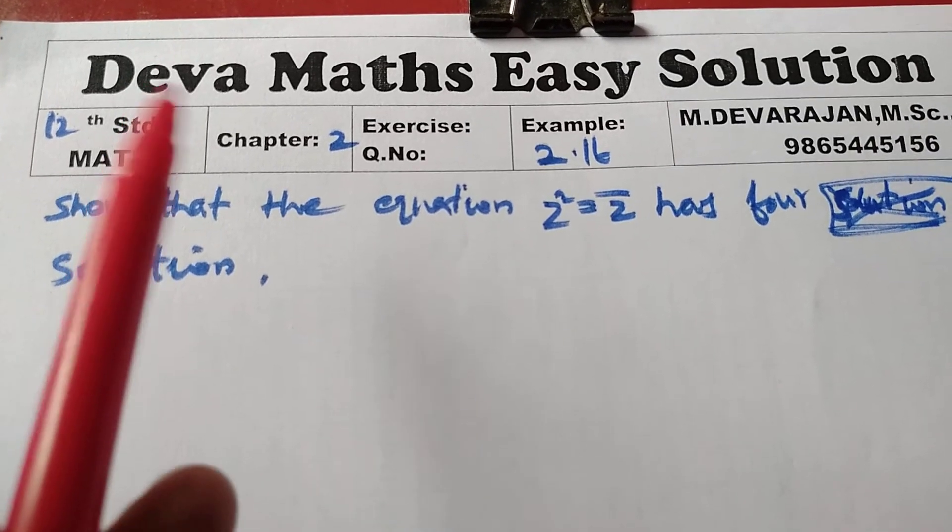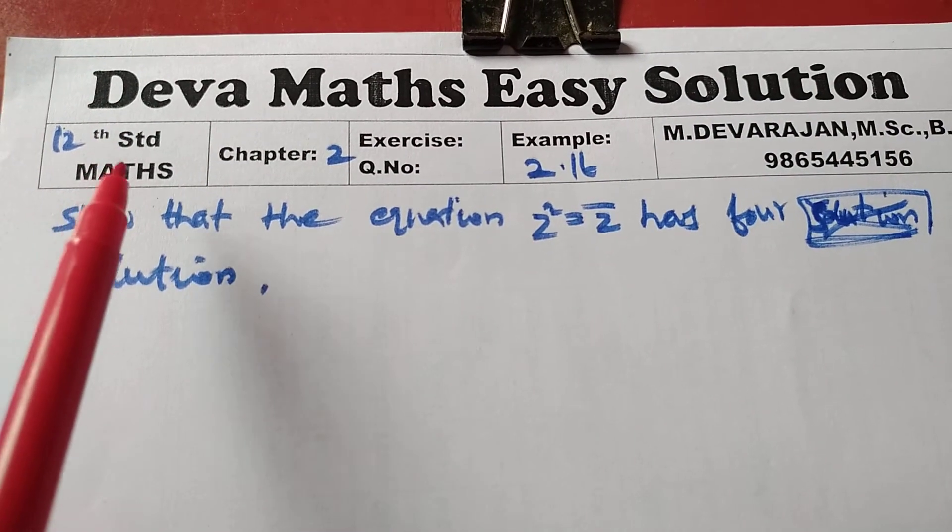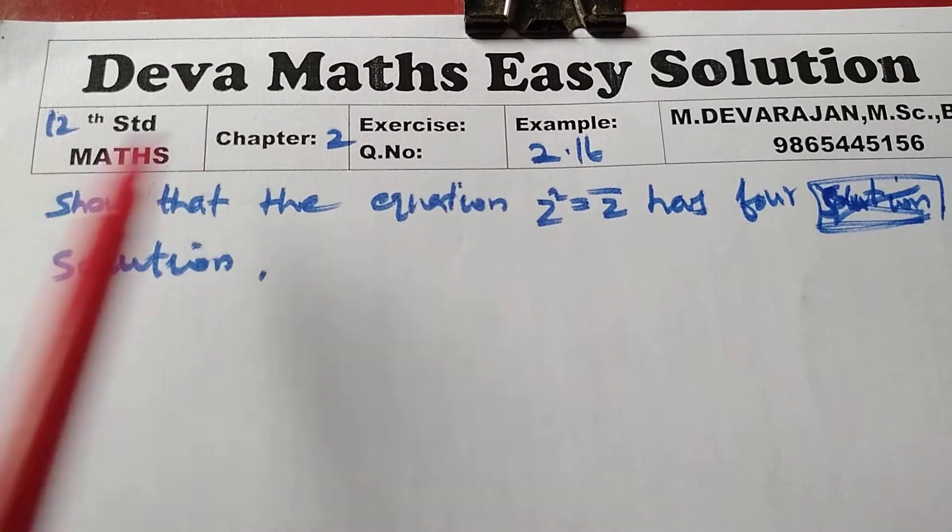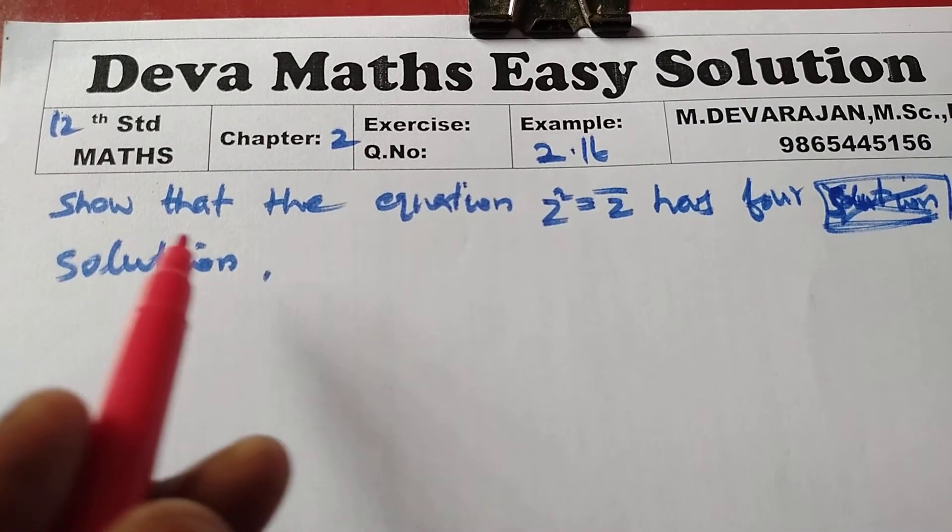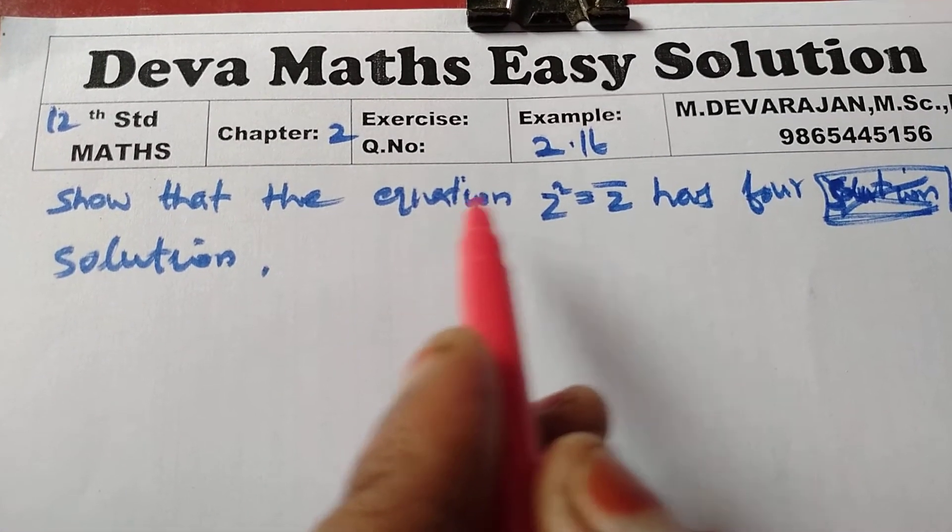Hi everyone, this is Deva from Deva Maths Easy Solution. Today we are going to see 12th standard Maths, Chapter 2, Example 2.16: Show that equation z squared equal to z bar has four solutions.